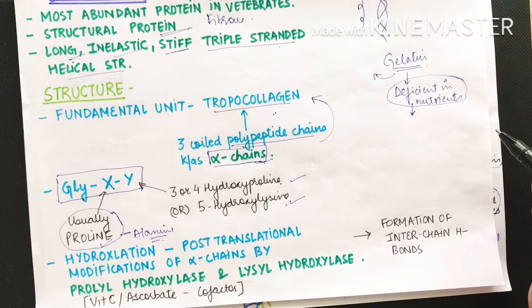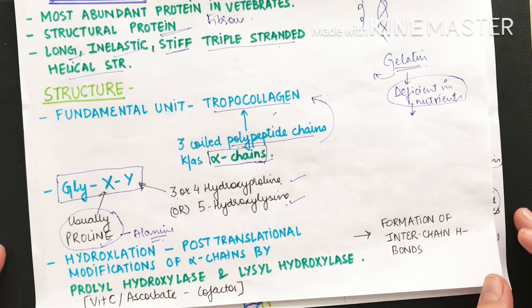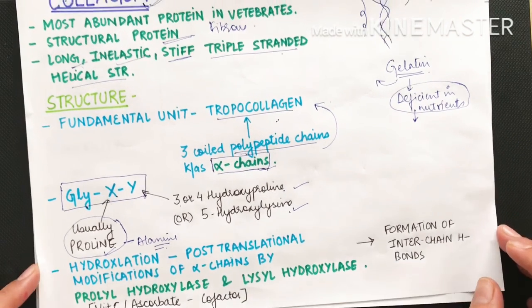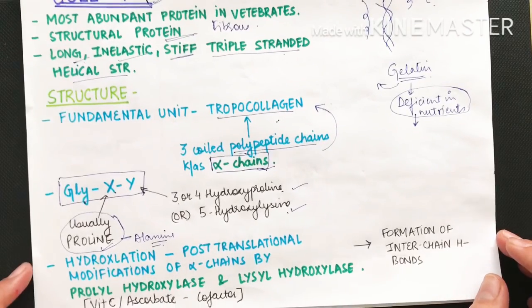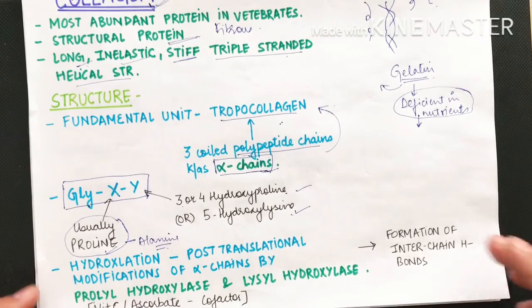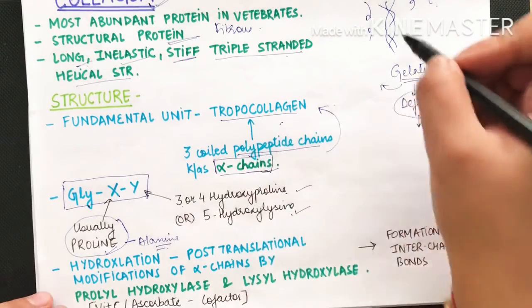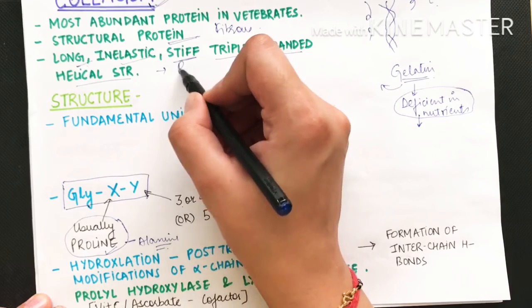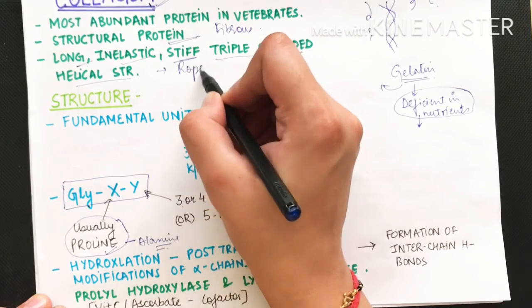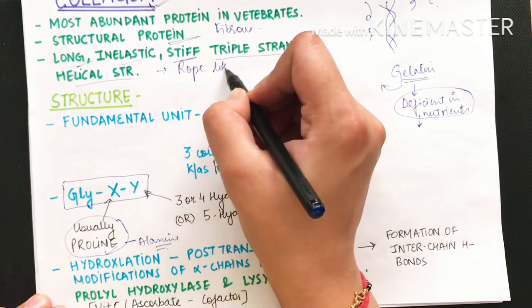Collagen is a three-stranded helical structure, forming a rope-like structure overall.